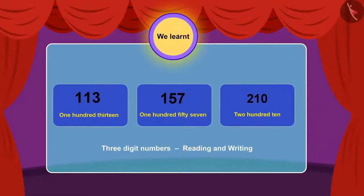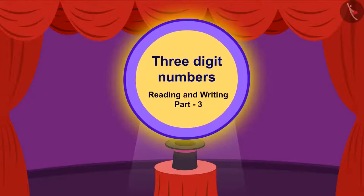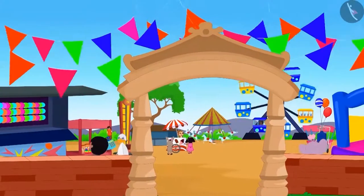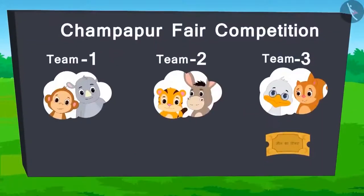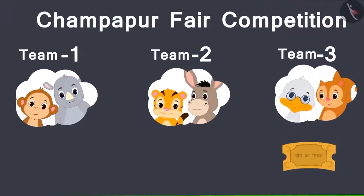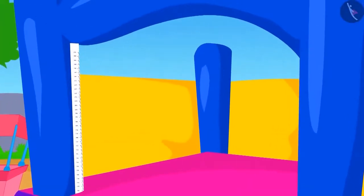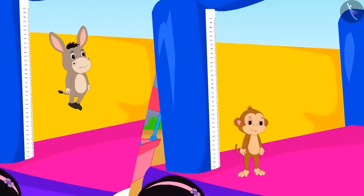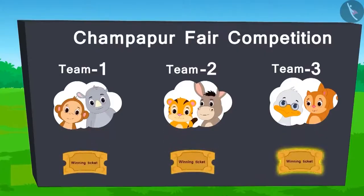In the previous video, we learnt how to read and write any three digit numbers. Let us learn more about this in this video. Let's see what's going on at the fair. The next competition is high jump. The team which makes the highest jump in this competition will win the ticket.